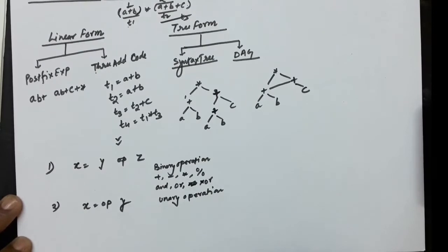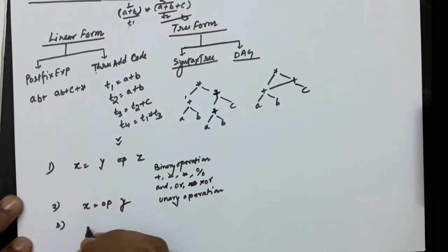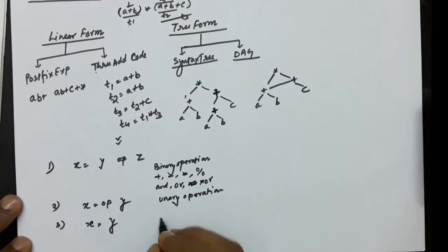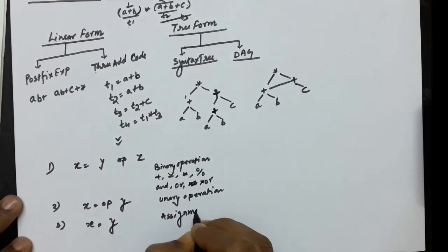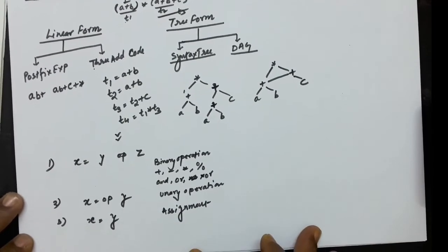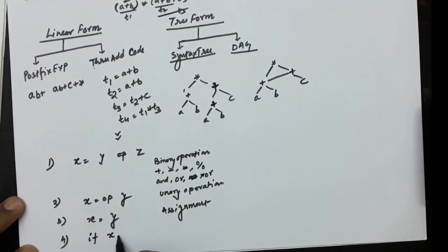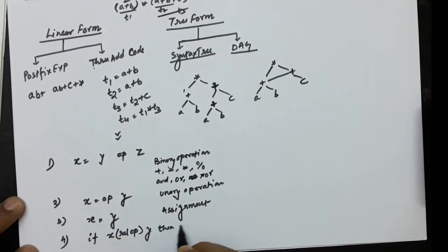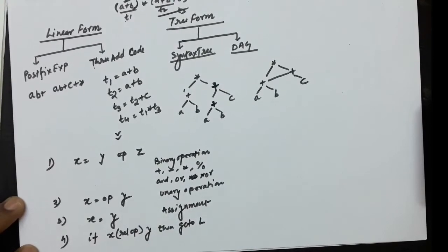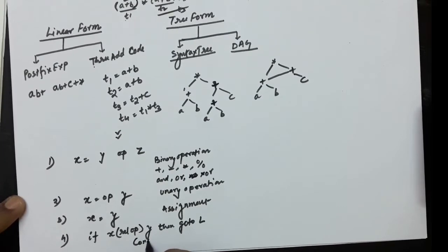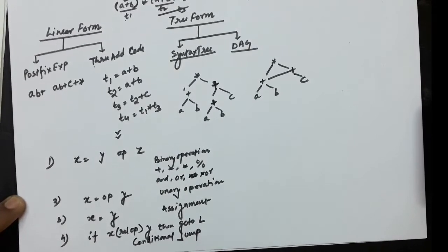The second form is: x = op y, where op is a unary operation such as negation or NOT — for example, NOT of seven. The third form is a simple assignment: x = y. The fourth form is the conditional jump: if x relop y goto L, meaning you jump to label L if the condition is true.